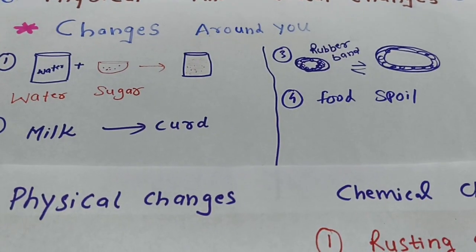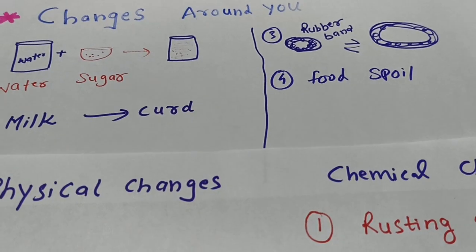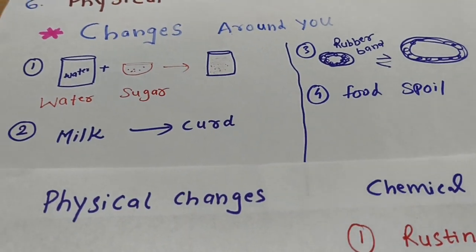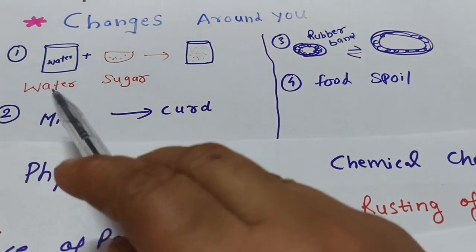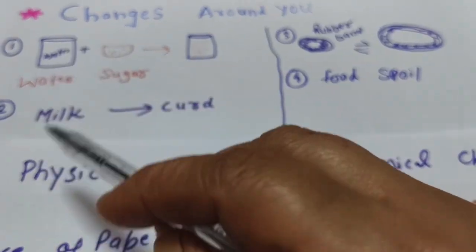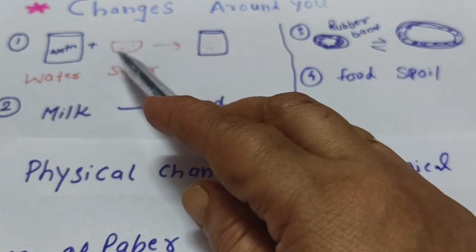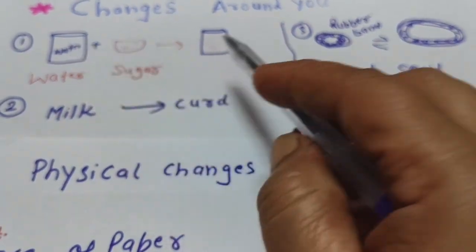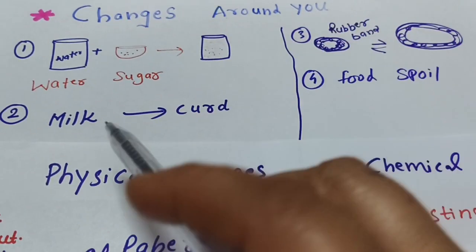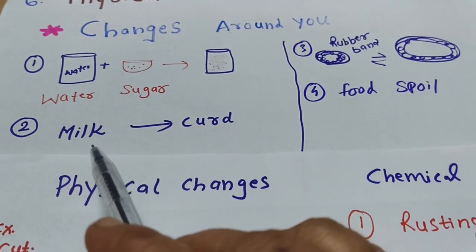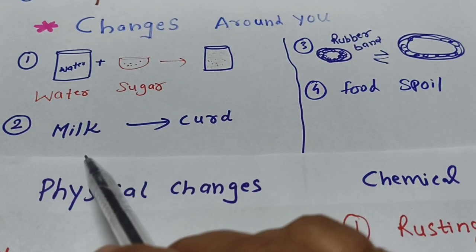Let's look at some examples of changes around us. If your mom told you to dissolve sugar in a glass of water, then what will happen? The sugar will dissolve in the water. If your mom made curd with milk, how does she make curd? How does milk change to curd?